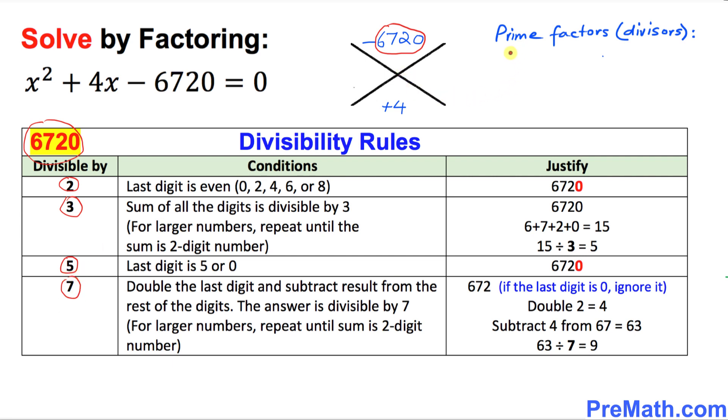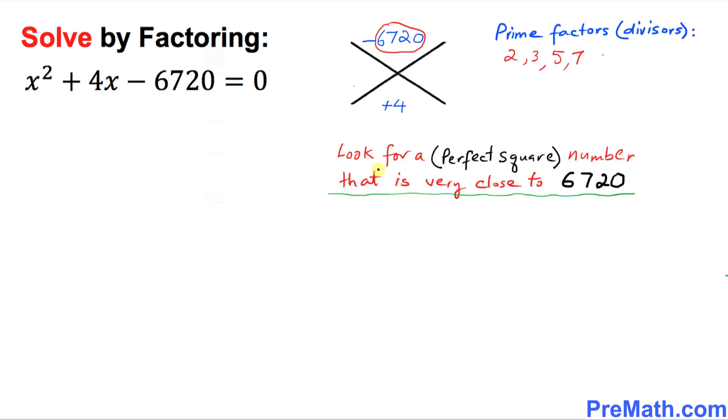So the possible prime factors are 2, 3, 5, and 7. They're going to help us a lot when finding the factors of 6720. Now we're going to look for a perfect square number that is very close to 6720.